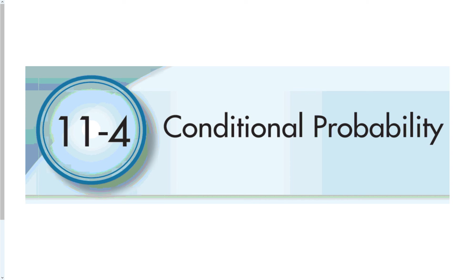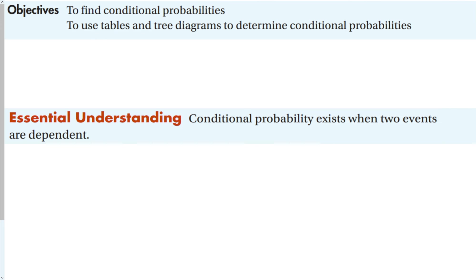Welcome to Online Algebra 2. This is section 11-4, Conditional Probability. Our objective for this section is to find conditional probabilities and to use tables and tree diagrams to help determine conditional probabilities. Conditional probability exists when two events are dependent — one depends on the other.